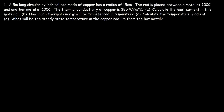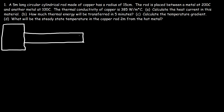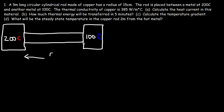Consider this problem. We have a long circular cylindrical rod made of copper, placed between two other metals: a hot metal and a cold metal. The hot metal is at 200 degrees Celsius and the cold metal is at 100 degrees Celsius. The length of the copper rod is five meters long. How can we calculate the heat current in this material?